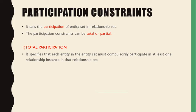Consider the example: a student enrolled in a college must have selected at least one subject. So total participation means each student must enroll in at least one course — that type of compulsory participation is total participation. It is also called mandatory participation.